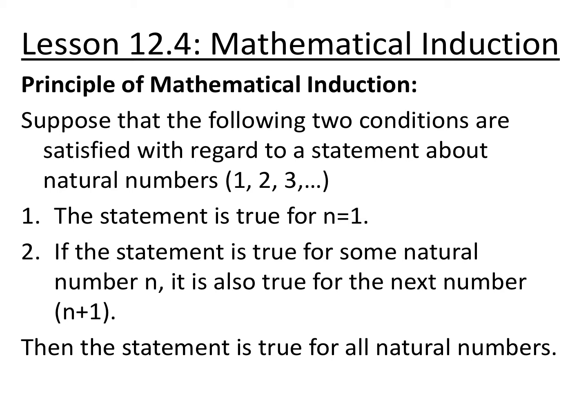The reason this works is that n is general, so if we've proved it for 1 and we assume it for n — n could be anything, it could be 1 — then we've proved it for 2 if we prove it for n plus 1, and so on. So if the two conditions hold, then the proof is complete.